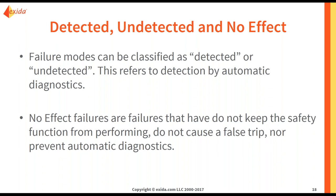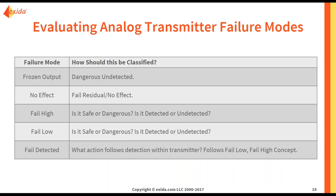So how do we apply these in your system? Your frozen output is very often dangerous undetected. You are not going to know that you have an unhealthy signal, because it is still within the healthy range. In this case, it is keeping your safety instrumented function from responding to the hazardous scenario. So it is dangerous, and it is undetected. No effect is a case where your signal is less accurate — perhaps it is noisy — but it is not keeping you from responding to the hazardous scenario, and it is not tripping your plant.